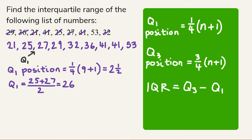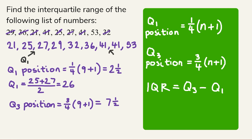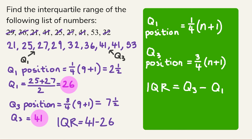To find the position of the upper quartile, we do three quarters of (n + 1) — three quarters of (9 + 1) — three quarters of 10 — which is 7.5. The seventh value is 41 and the eighth value is also 41, so halfway between them is 41 as well. The lower quartile is 26 and the upper quartile is 41. To find the interquartile range, subtract the lower from the upper: 41 minus 26 equals 15. So the interquartile range is 15.